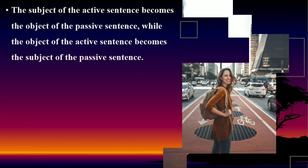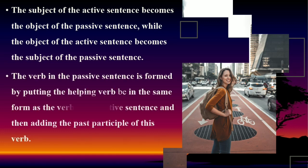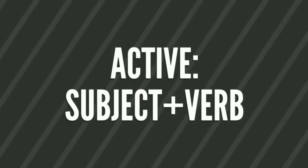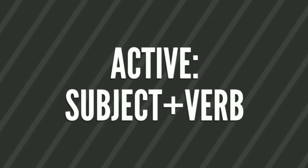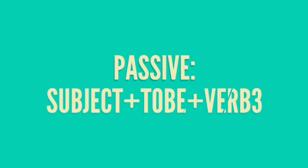The subject of an active sentence becomes the object of a passive sentence, while the object of an active sentence becomes the subject of the passive sentence. The verb in the passive sentence is formed by putting the helping verb 'be' in the same form as the verb in the active sentence, and then adding the past participle (verb 3). So simply, an active sentence uses subject + verb, while a passive sentence uses subject + to be + verb 3.